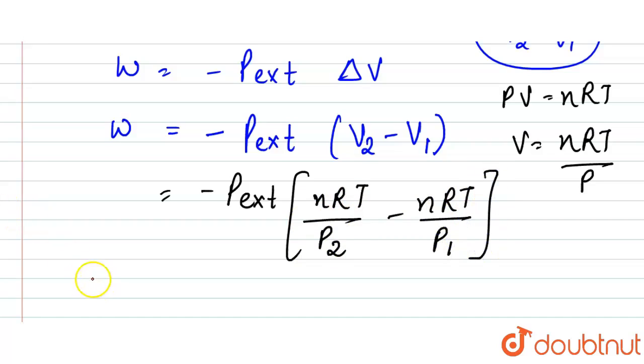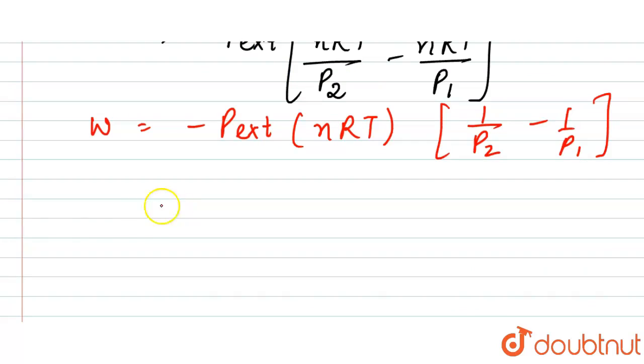So we can write it as W equals minus p external into nRT, and here what we will have is 1 upon p2 minus 1 upon p1.